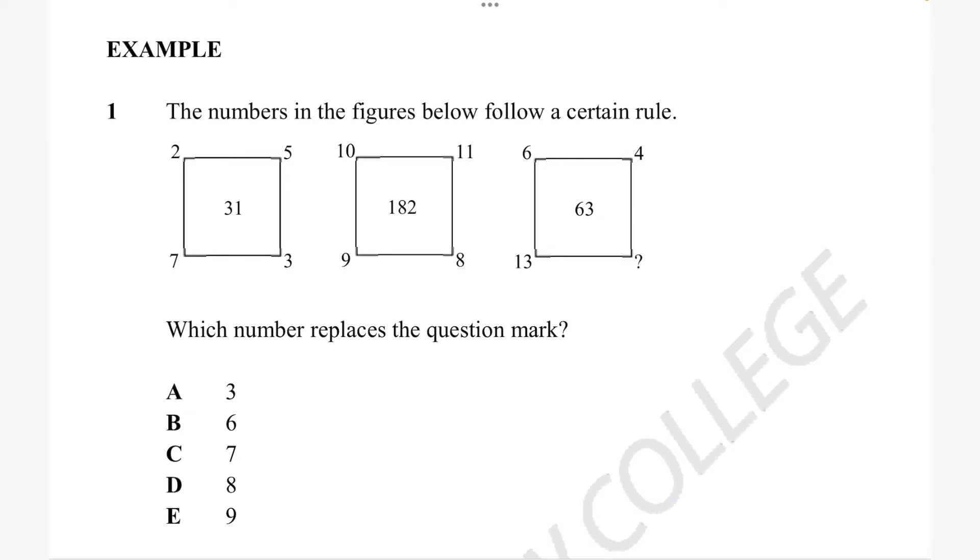In this question, we're given a question that says the numbers below follow a certain rule. And we're given these three little funny squares with numbers in them. The question wants us to figure out what this question mark is equal to. So because we know that each of these three squares are basically independent, but they all follow the same rule, we can kind of choose whichever one we want to start out with. So we can choose this square, or you can choose this square to use as your example.